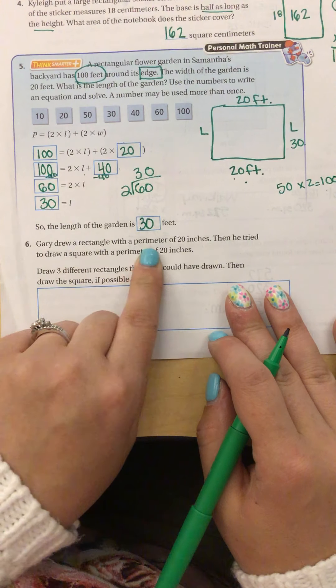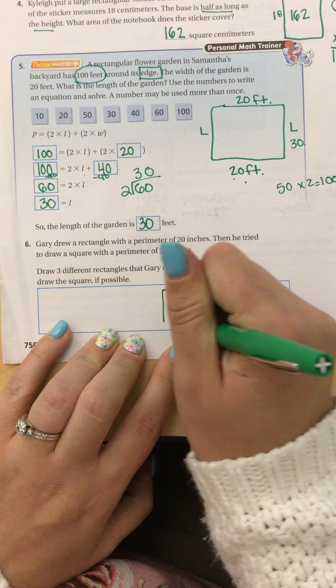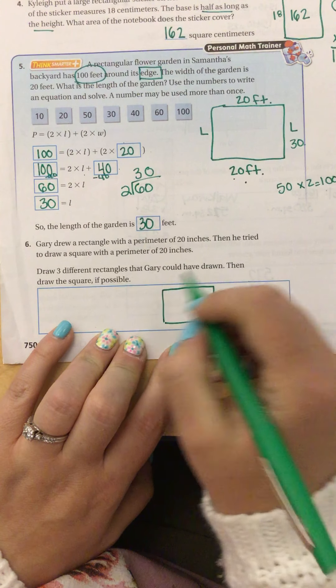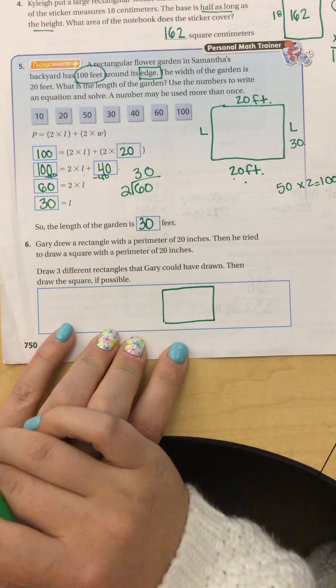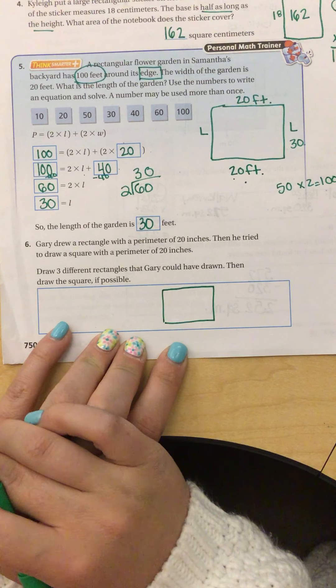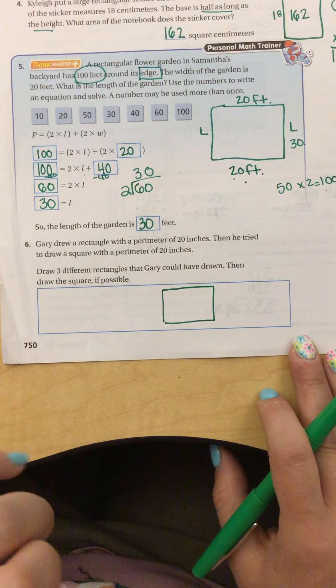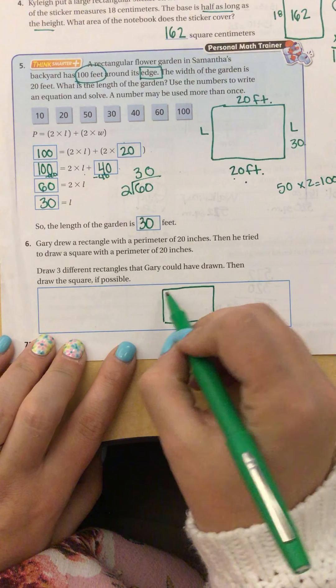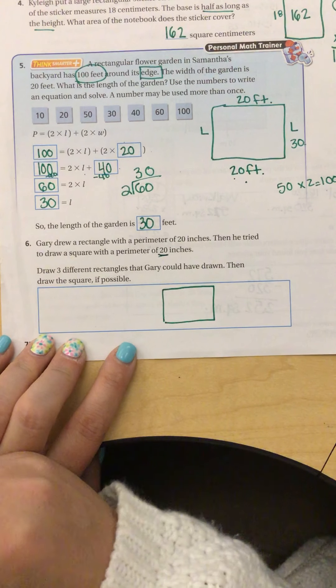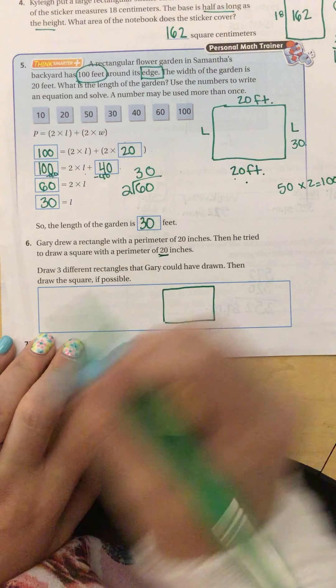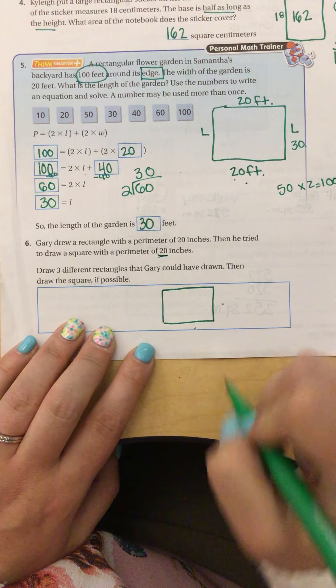Number 6, Gary drew a rectangle with a perimeter of 20. Okay, so the perimeter all the way around is 20. He tried to draw a square with a perimeter of 20. Is there an option? Well, I need to see about if there's anything I can add up to make 20. And remember, the perimeter is 2 of the lengths and the width. So really, my sides need to add up to 10.